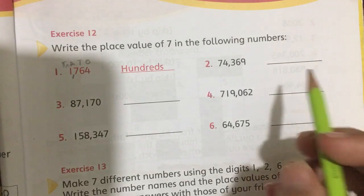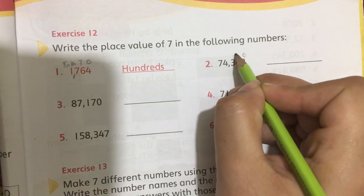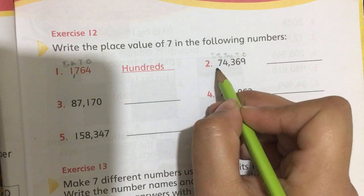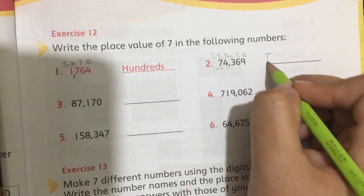Number 2 is 74,369. The place values are 1, 10, 100, 1000, and 10,000. So in this number, 7 has a place value of 10,000.